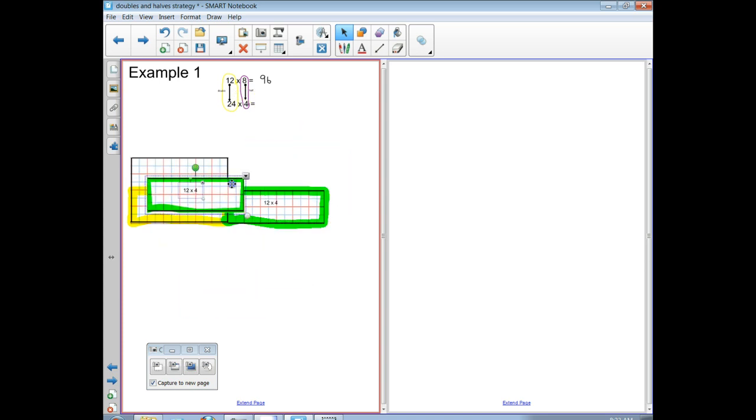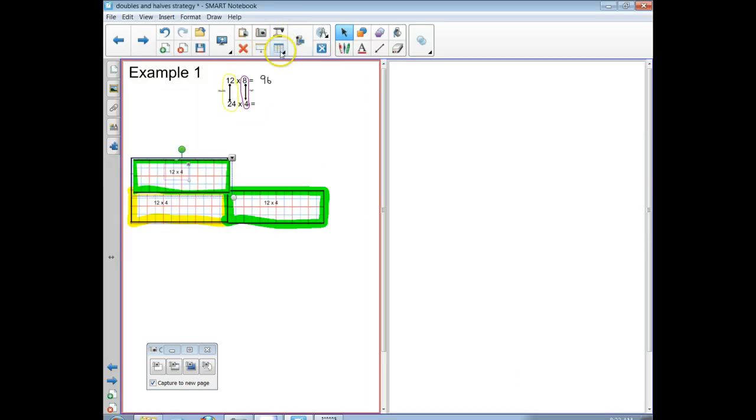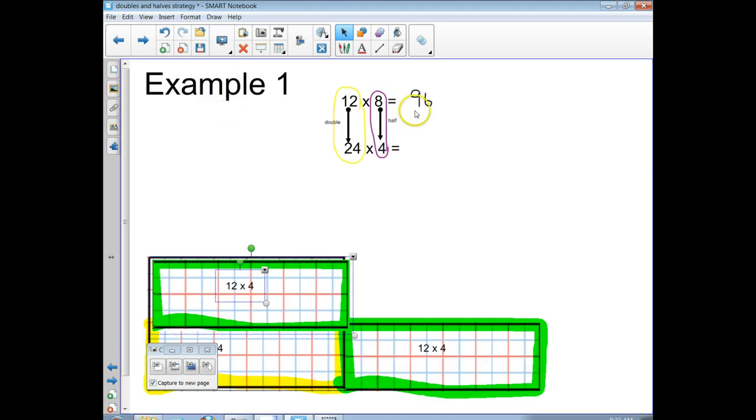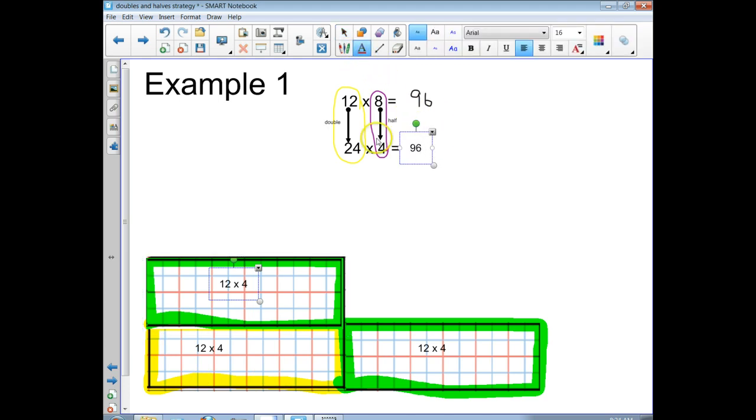So what does that tell you about the answer? Let me leave that there and I'm gonna go back to the single page view. See how these are the same? So now that means that this answer is going to be 96. So knowing 12 times 8 can help me get the answer to 24 times 4, because if I double the 12 and then cut the other factor in half, the answer is going to stay the same.